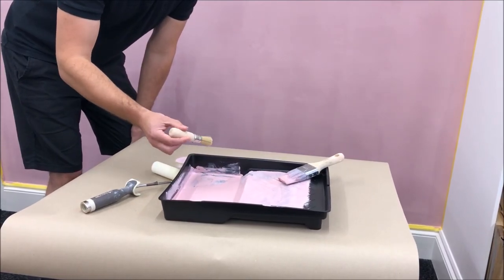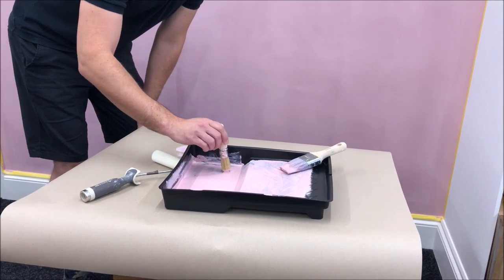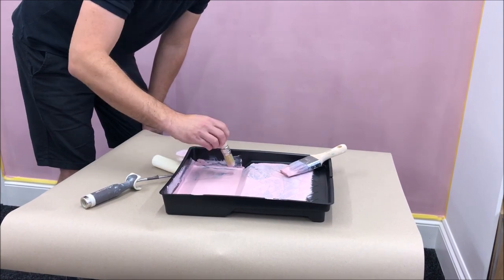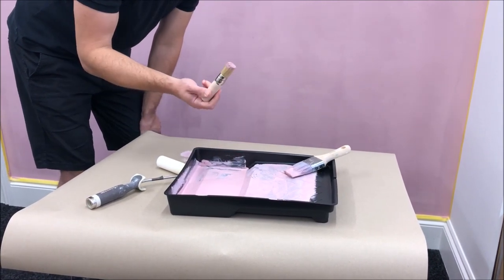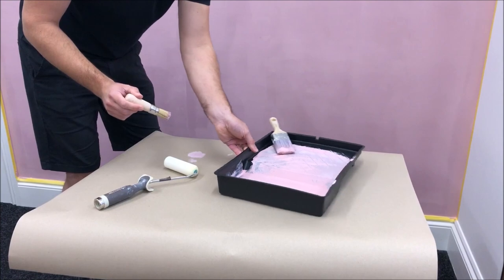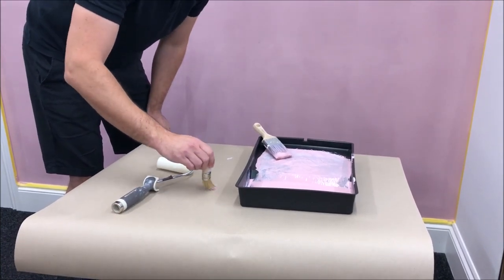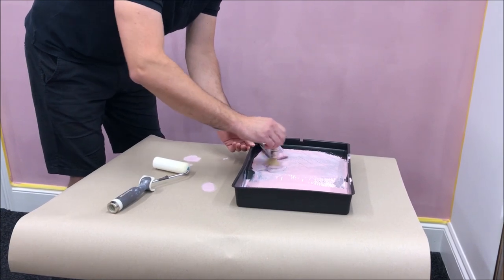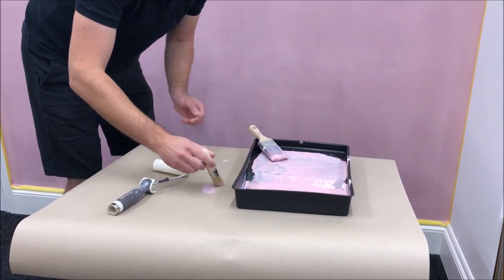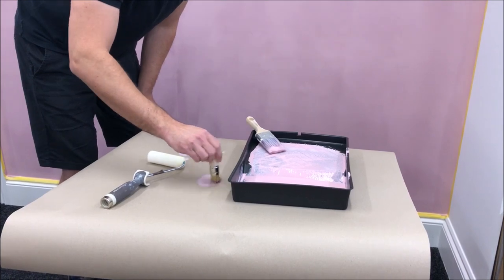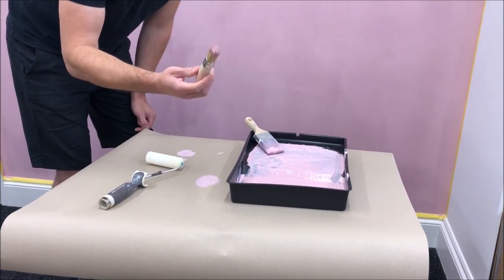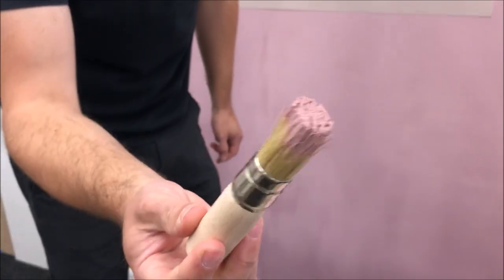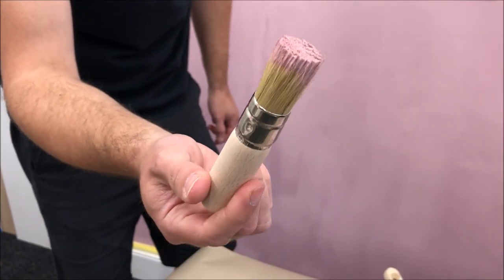Okay, so now we're going to load our stencil brush. What you want to do before you start painting is dab the brush off onto some paper like this. You don't want to use too much paint when stenciling because otherwise paint can get underneath the edges of the stencil. The paintbrush wants to look like this when you start painting, and then you're ready to start stenciling the wall.